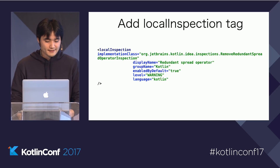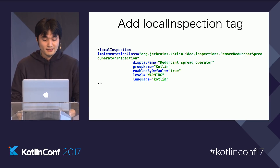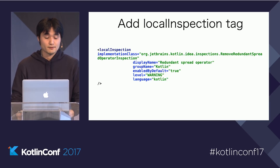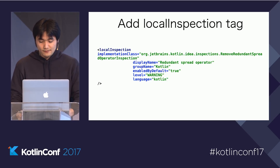I override the visitArgument method for KtValueArgument and add a println for 'Hello World' just to make sure the inspection is being triggered. In order to register the inspection, we add a localInspection tag to the plugin.xml file, with the implementation class set to the fully qualified class name of the inspection class.